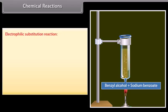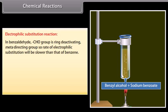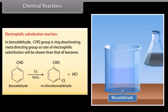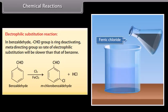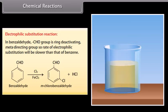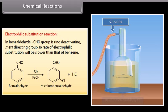Electrophilic substitution reaction: in benzaldehyde, the aldehyde group is a ring-deactivating, meta-directing group, so the rate of electrophilic substitution will be slower than that of benzene. Benzaldehyde reacts with chlorine and ferric chloride solution and forms meta-chlorobenzaldehyde and hydrochloric acid.